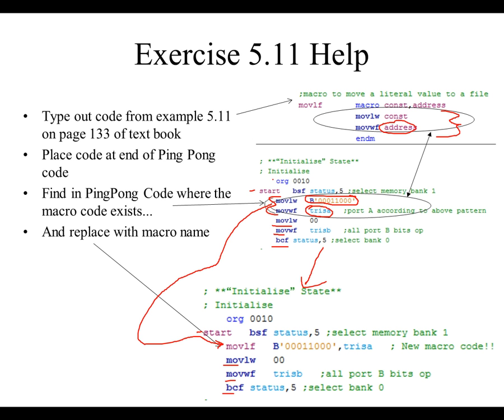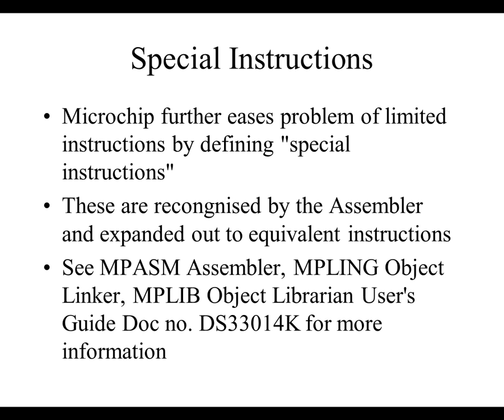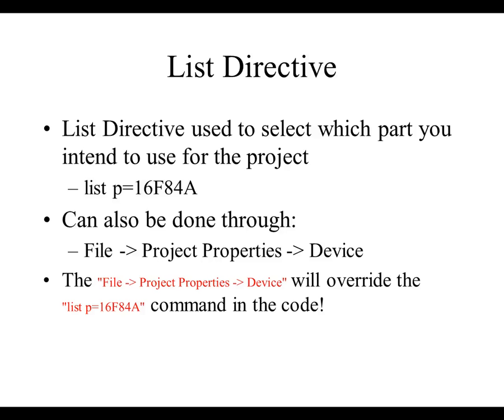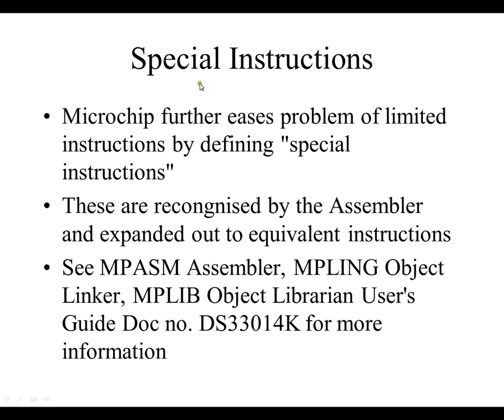Let's keep moving along. So that's just a little bit of help for exercise 5.11. Now we're going to talk a little bit about your special instructions. So microchip does give you some special instructions. This further eases the problem of limited instructions by defining these special instructions. These are recognized by the assembler and expanded out to equivalent instructions.